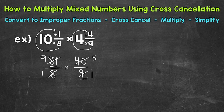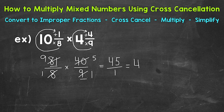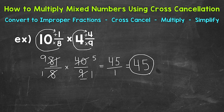Once we get to this point, we can multiply straight across. 9 times 5 is 45, and 1 times 1 is 1. Now 45 over 1 equals 45. So let's write our answer as a whole number instead of leaving it as an improper fraction. Our final answer is 45.